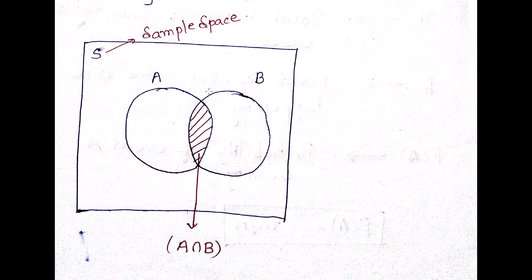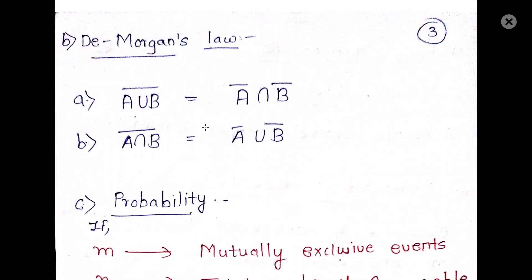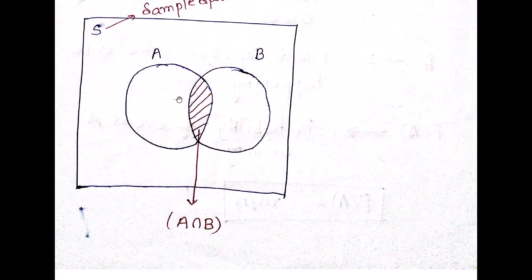Next is the sample space, which is very important. You have a sample space named S, with two events A and B inside it. The common region between them is called A intersection B. This diagram will have a lot of applications — there is a sample space S, two events A and B, and where these two events are common to each other, there is an intersection called A intersection B.